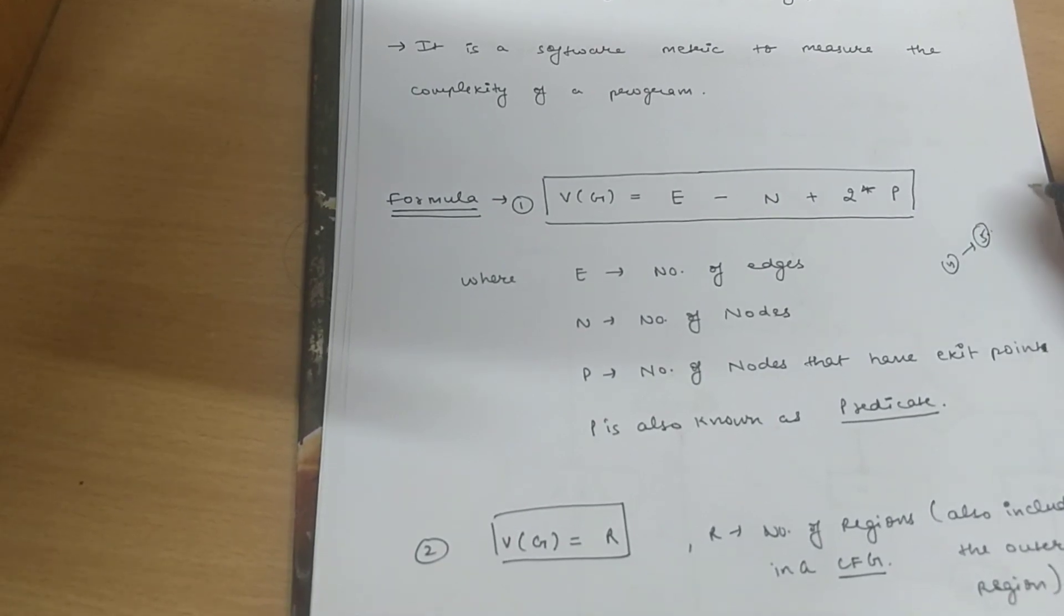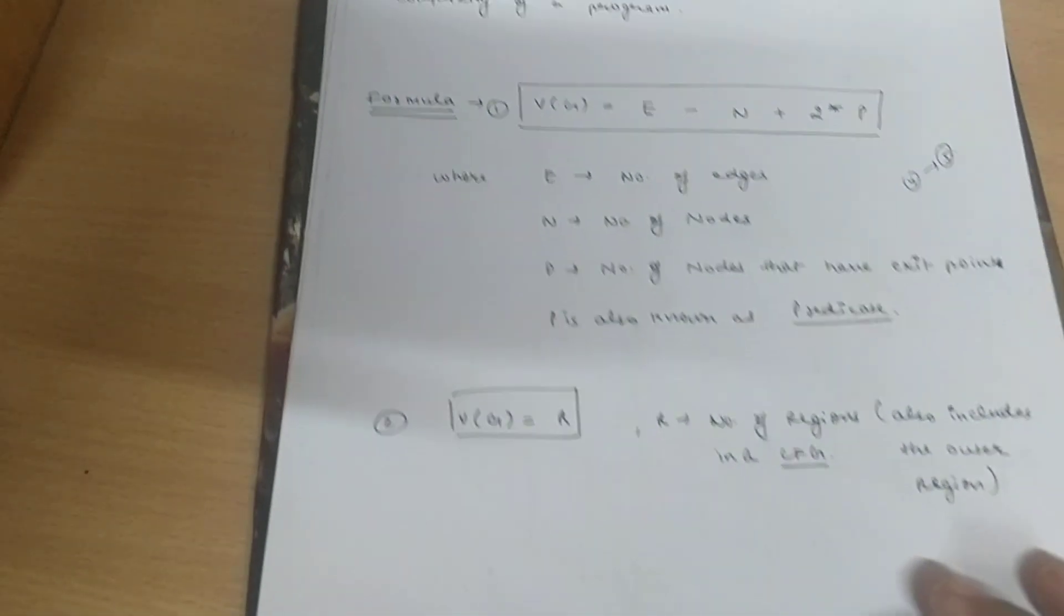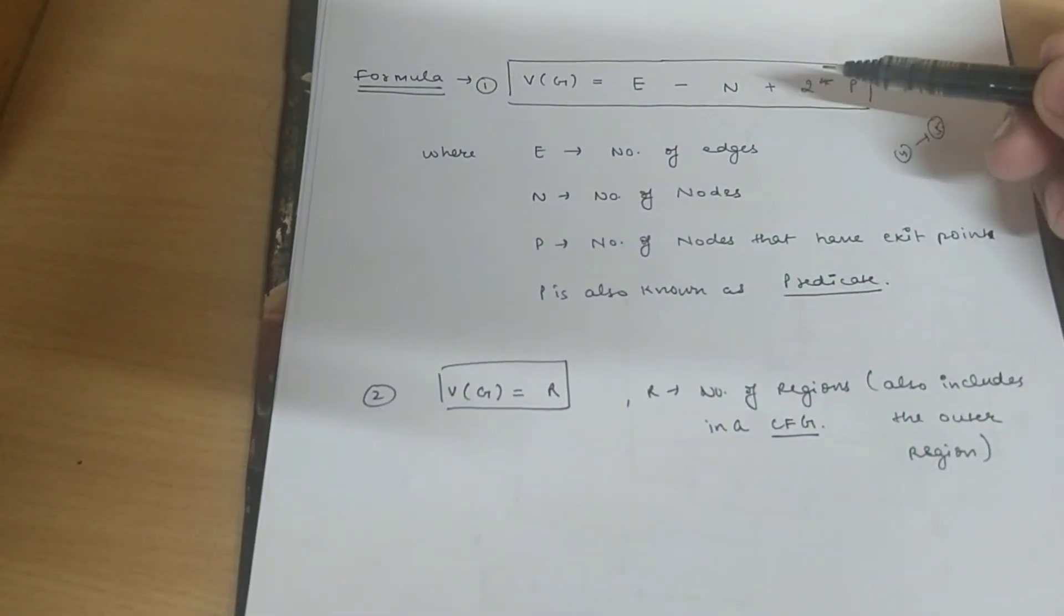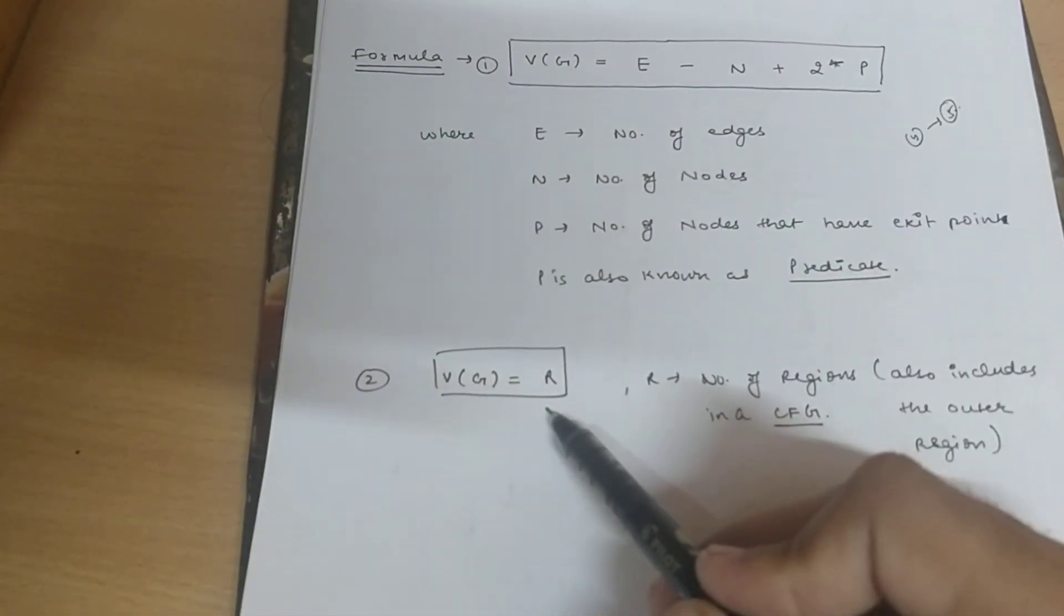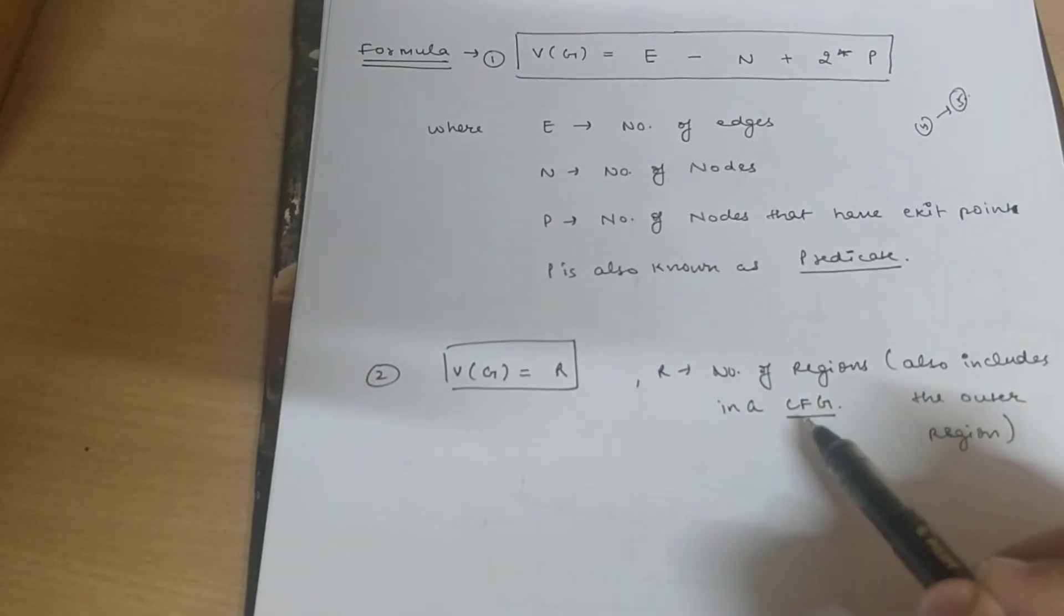This 5 doesn't have any further node. So this is an independent node. P is also known as predicate node. Another formula of determining Cyclomatic complexity is this: Vg equal to R, where R stands for number of regions in our control flow graph.